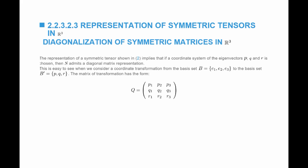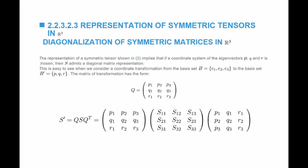In the next slides I will show how this process comes about and how to diagonalize a symmetric matrix. Consider a symmetric matrix S in basis set B made of E1, E2, E3. Now find the new basis set B prime, which consists of p, q, r — the orthonormal eigenvectors of S. The coordinate transformation matrix Q is formed with columns p1, p2, p3; q1, q2, q3; r1, r2, r3 — the components of p, q, r in the original coordinate system. The new components S prime equal Q S Q^T.